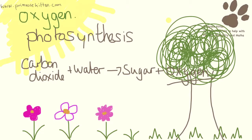As things progressed, more and more plants evolved and all of them were doing photosynthesis. So the levels of carbon dioxide in the atmosphere fell and the levels of oxygen rose. And because the atmosphere was increasing in the amount of oxygen, this allowed animals and people to evolve.